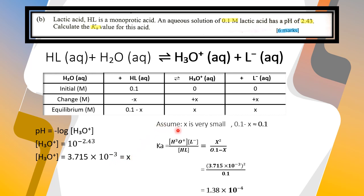Next step, we assume x is very small. So 0.1 minus x equals 0.1.